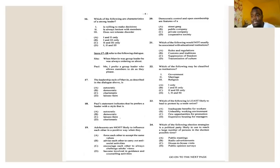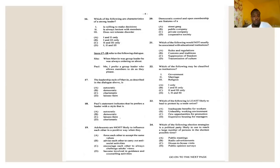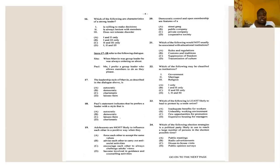Number eighteen says: Paul's statement indicates he prefers a leader with what style? Paul prefers a leader who allows members to do as they please. Options are autocratic, democratic, laissez-faire, and charismatic. The answer for number eighteen is C — laissez-faire — that is a free-for-all leader who allows people to do whatever they want.